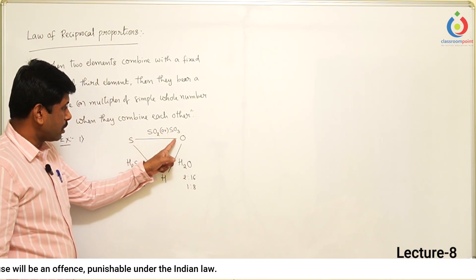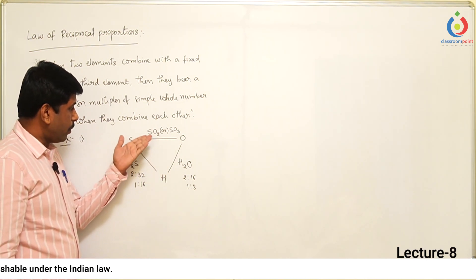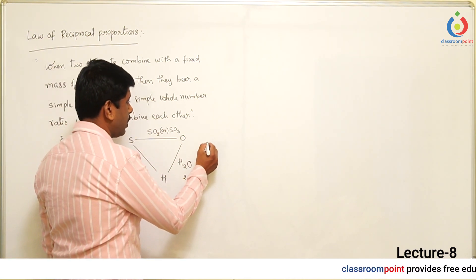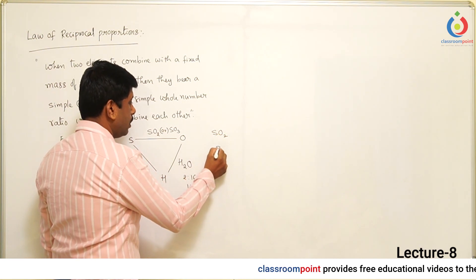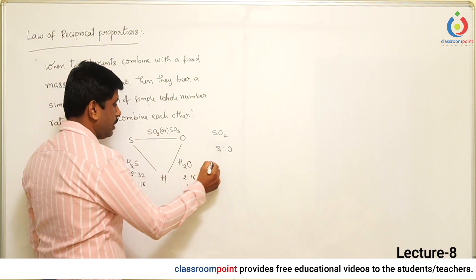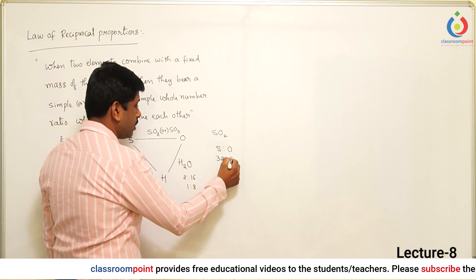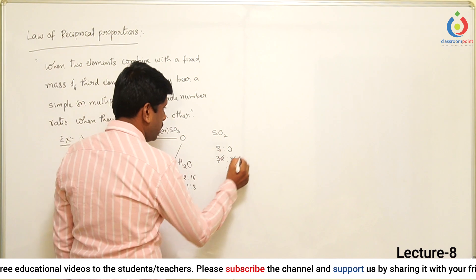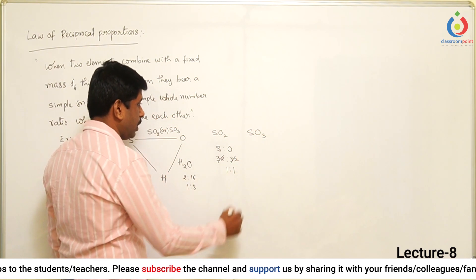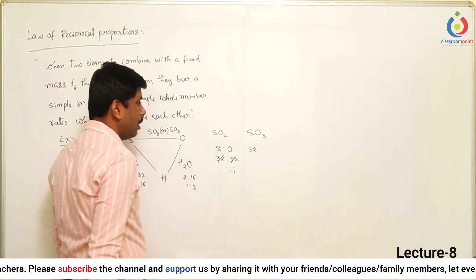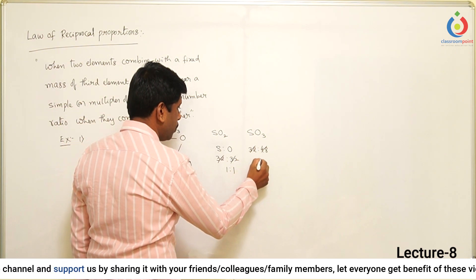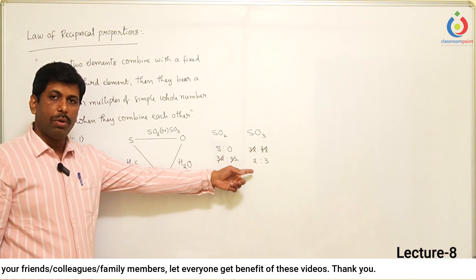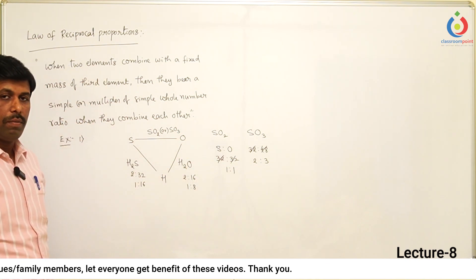Imagine sulfur and oxygen reacting with each other — they may produce either SO₂ or SO₃. Let us take the mass ratios of sulfur and oxygen in these compounds. In SO₂, sulfur is 32 and 2 oxygens is 32, so the ratio is 1 is to 1. In SO₃ the ratio is 2 is to 3. So it bears a simple whole number ratio or multiples of the simple whole number ratio. That is what we call the law of reciprocal proportions.